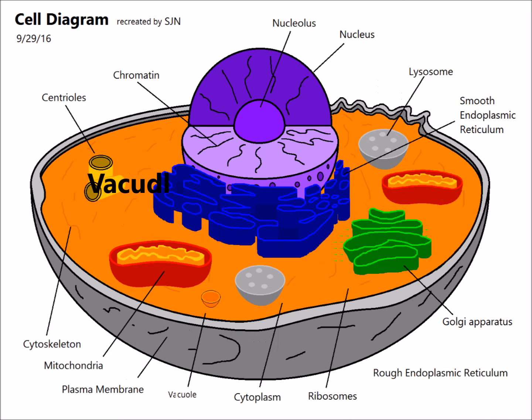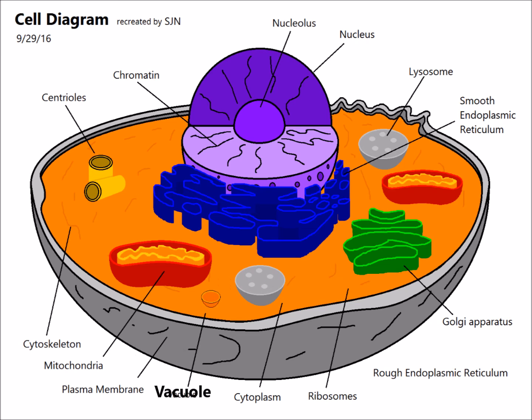And finally, we have the central vacuole, which stores water, food, and wastes. In this cell diagram, I colored the vacuole orange.